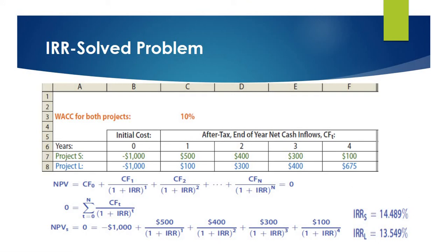However, if the projects are mutually exclusive, in that case, based on IRR, we should accept Project S, because the rate of return of Project S, that means the IRR of Project S, is more than the IRR of Project L.